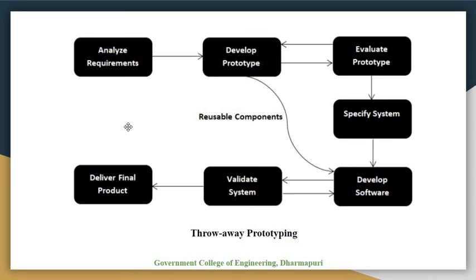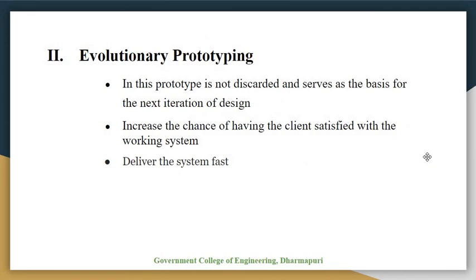Next we will see evolutionary prototyping. In evolutionary prototyping, the prototype is not discarded and serves as the basis for the next iteration of design. The actual system is seen as evolving from a very limited initial version to its final release. Evolutionary prototyping also fits in well with modifications that must be made to the system during operation and maintenance activity in the lifecycle. Using this prototyping approach delivers the system in a faster manner.